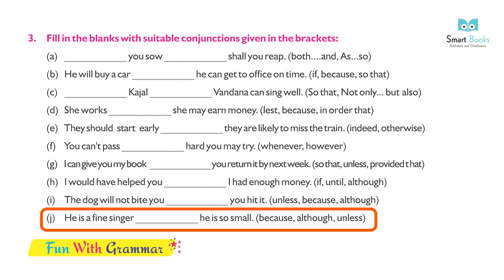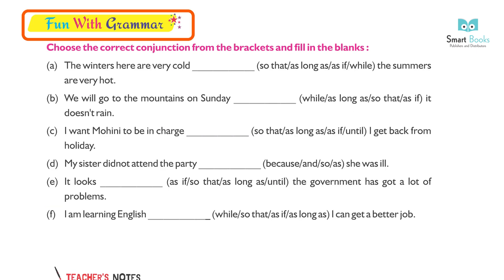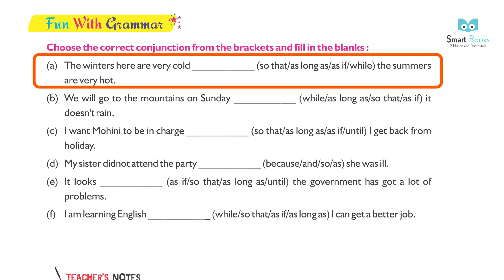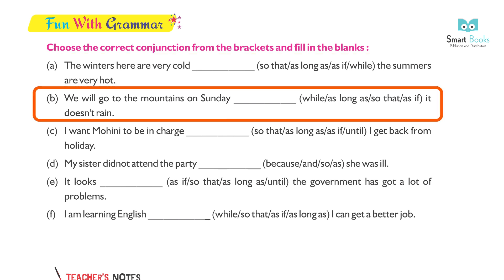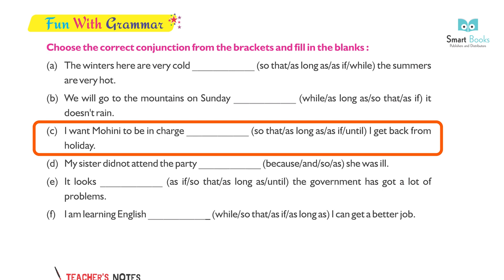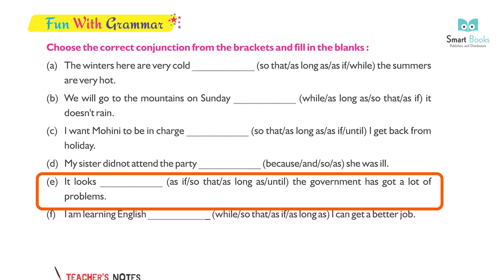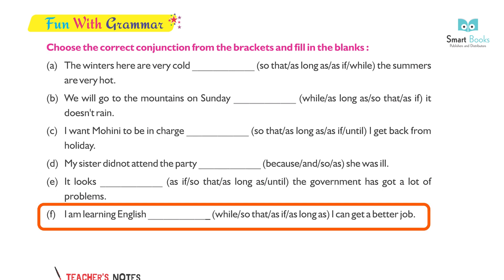Exercise 3 — Fill in the blanks with suitable conjunction: (a) As you sow so shall you reap. (b) He will buy a car so that he can get to office on time. (c) Not only Kajal but also Vandana can sing well. (d) She works because she may earn money. (e) They should start early otherwise they are likely to miss the train. (f) You can't pass however hard you may try. (g) I can give you my book provided that you return it by next week. (h) I would have helped you if I had enough money. (i) The dog will not bite you unless you hit it.